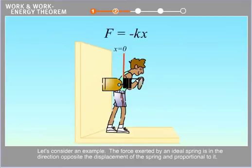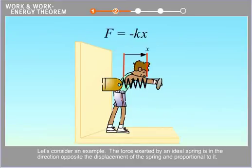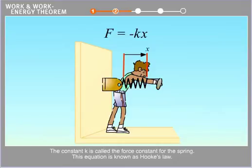Let's consider an example. The force exerted by an ideal spring is in the direction opposite the displacement of the spring and proportional to it. The constant k is called the force constant for the spring. This equation is known as Hooke's law.